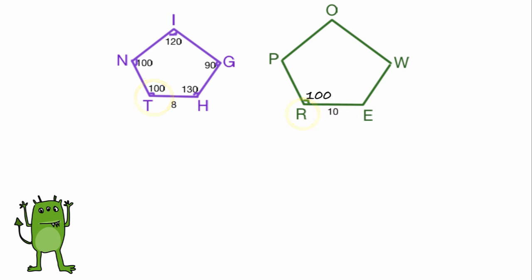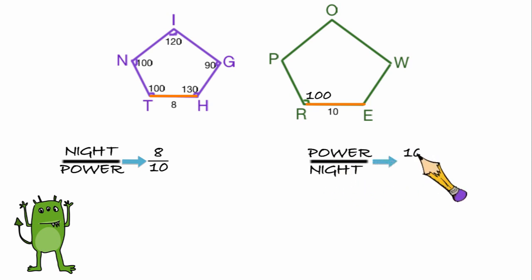We also notice that the side T8 corresponds to the side RE. So what is the similarity ratio of night to power? Well, side T8 is 8 centimeters and side RE is 10 centimeters, so the ratio is 8 to 10. What if I asked for the similarity ratio for power to night? That would just be 10 to 8. And if I only asked what is the similarity ratio for this problem, either answer would have been correct.